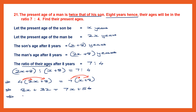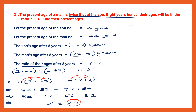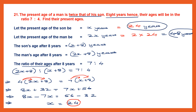Getting all x terms to one side: 8x minus 7x equals x, and 56 minus 32 equals 24. So x equals 24. Since x is the present age of the son, the son's age is 24 years. The father's age is 2x, that is 2 into 24 which is 48. So the father's present age is 48 years and the son's age is 24 years.